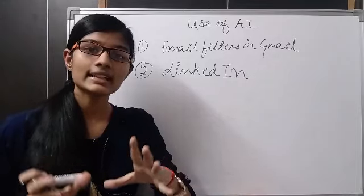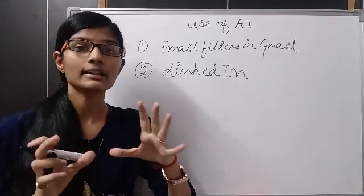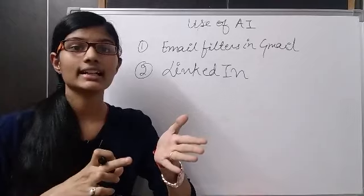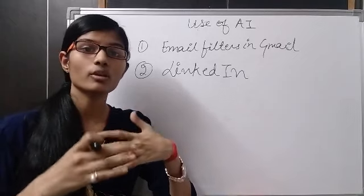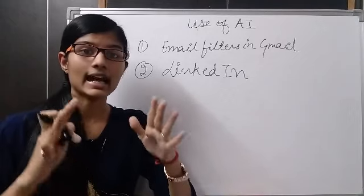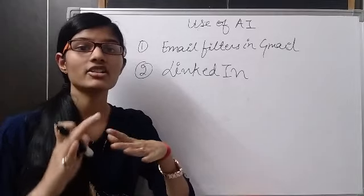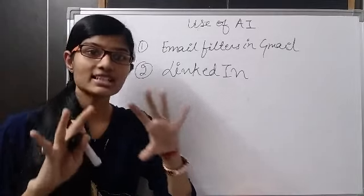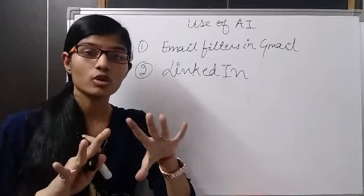So basically what AI does is it searches the related jobs, whatever job role you have entered, and it suggests and shows you the respective jobs for the job role you have entered. So on the social networking site LinkedIn, it helps like this.